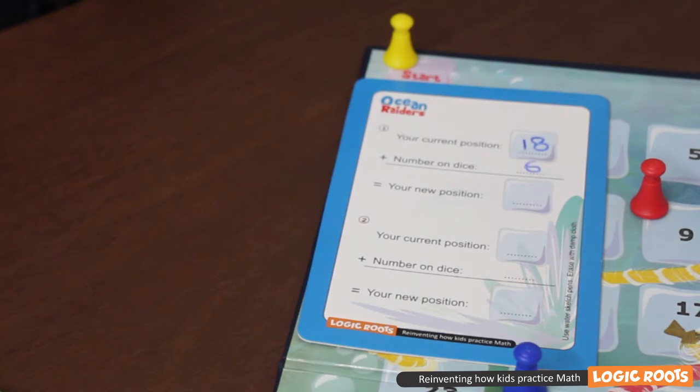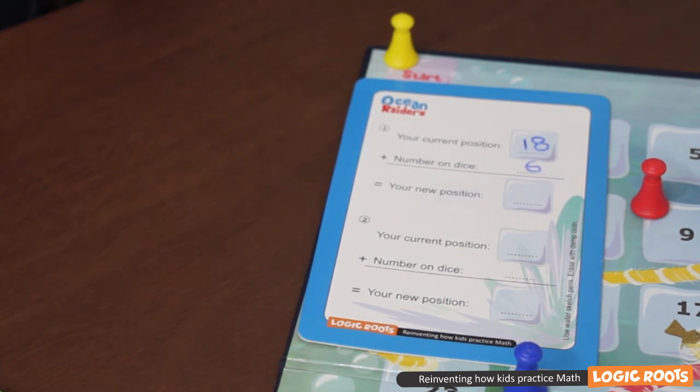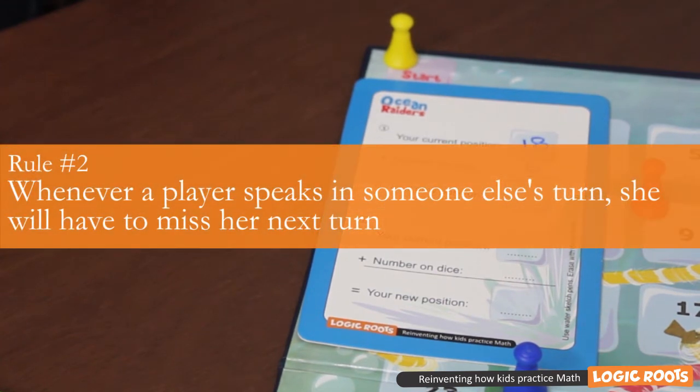Now how can we forget about that one friend who speaks in everyone else's turn? Well, if she does that in this game, then she will have to miss her next turn. This is the second rule of the game: Whenever a player speaks in someone else's turn, she will have to miss her next turn.